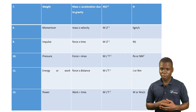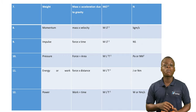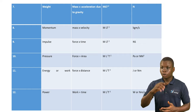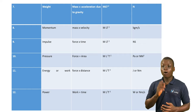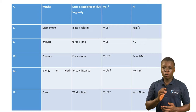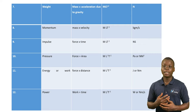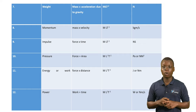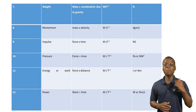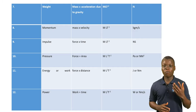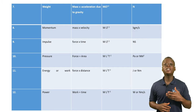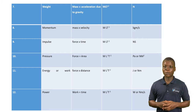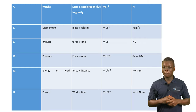Next up we have pressure. The derivation for pressure is force times area. The dimension of pressure will be MLT raised to power minus 1. Impulse is the product of force and time, and the dimension will be MLT raised to power minus 1. Impulse is measured in Newton seconds.